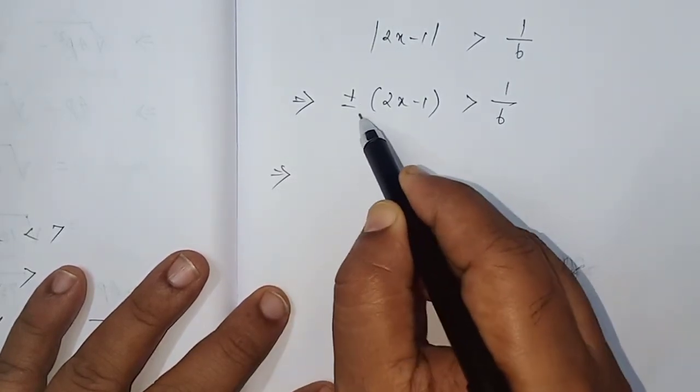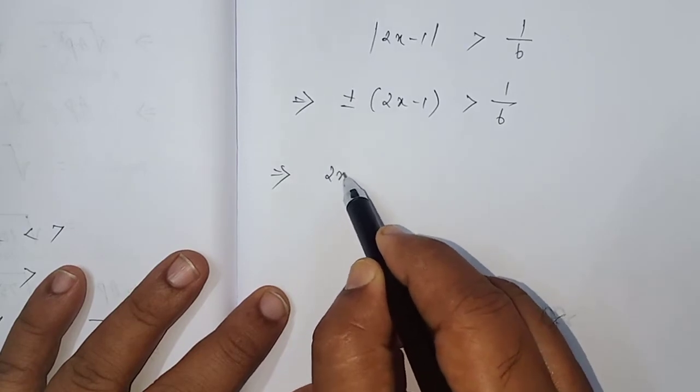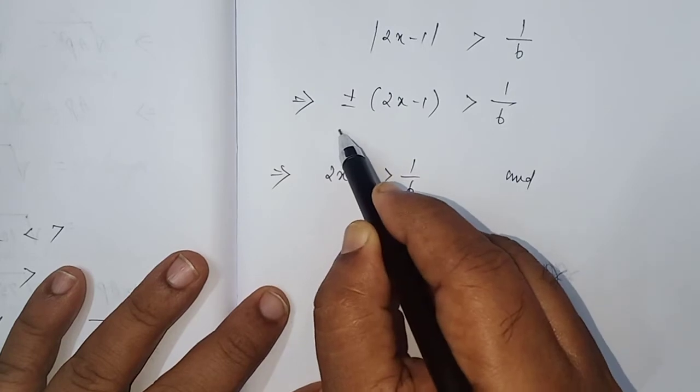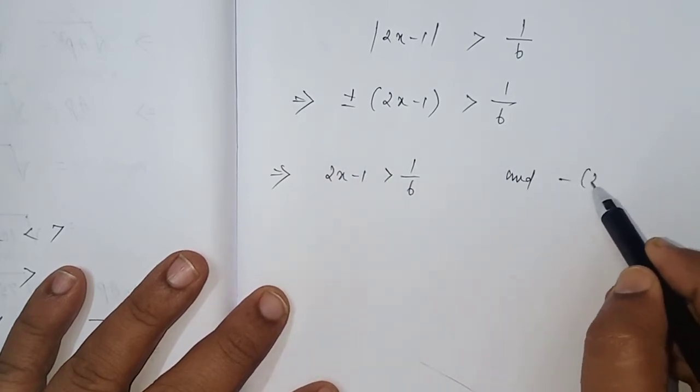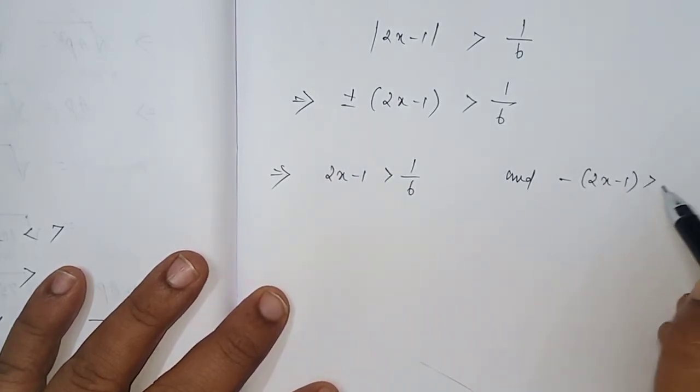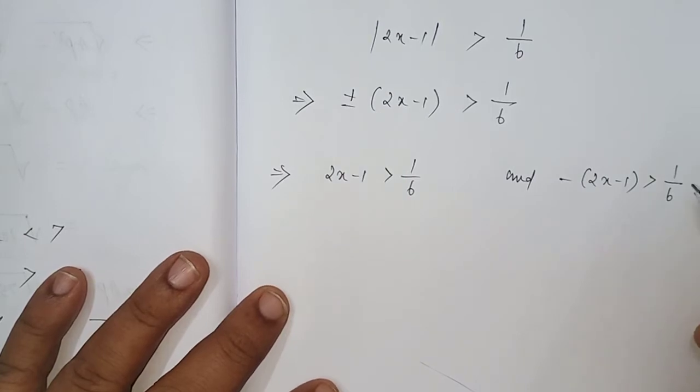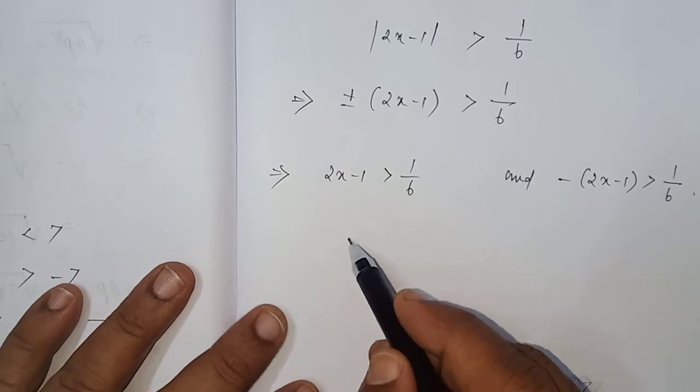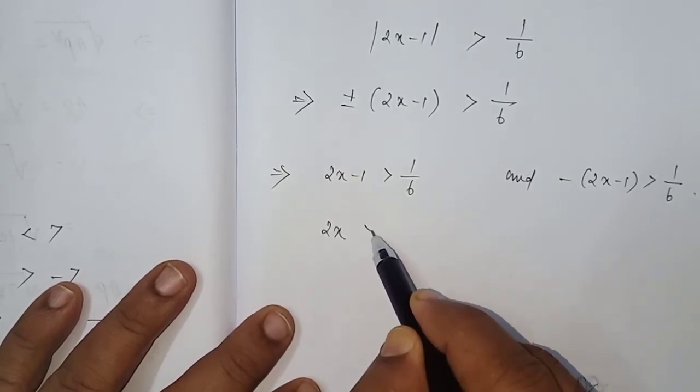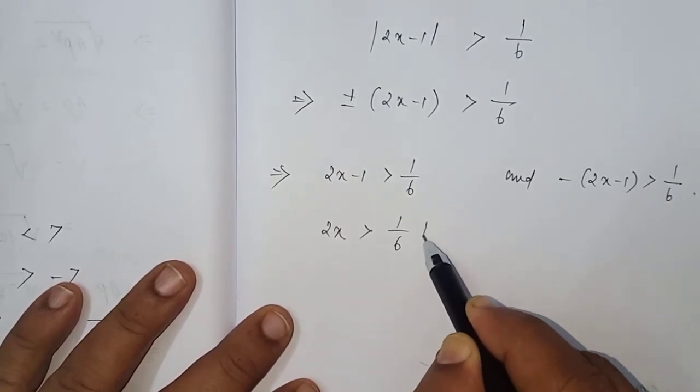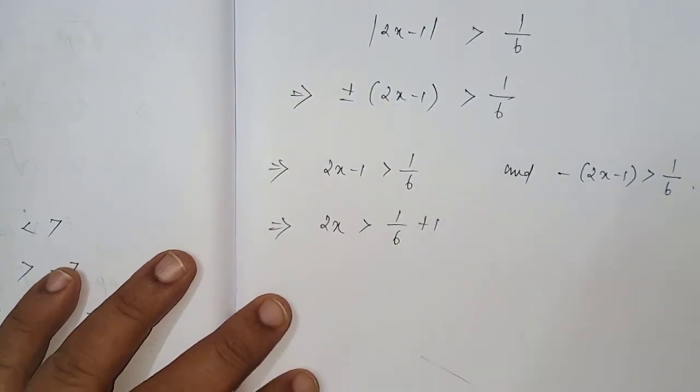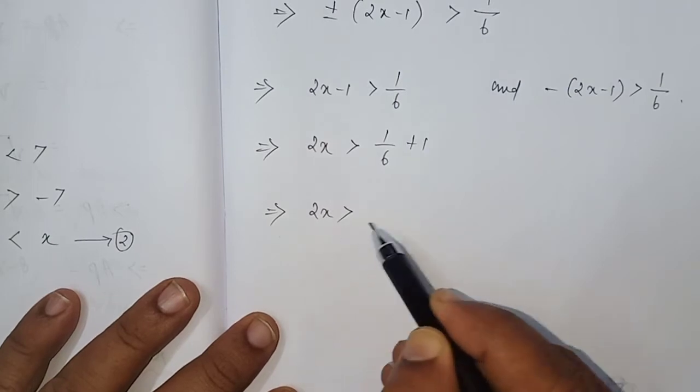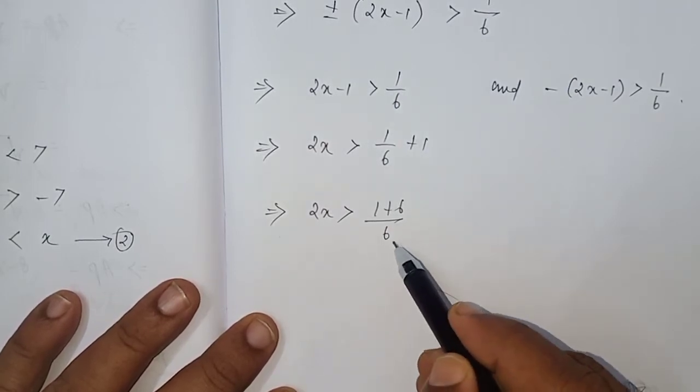Which implies, I take the positive one first: 2x minus 1 which is greater than 1 by 6. From this inequality, you have to find the value or values of x. 2x which is greater than 1 by 6 plus 1. Minus 1 comes right hand side plus 1. Which implies 2x which is greater than 1 plus 6 by 6. What is the LCM? 6.